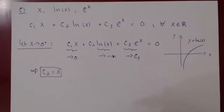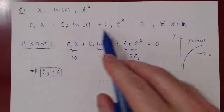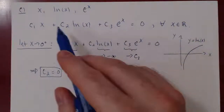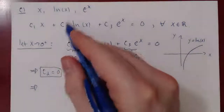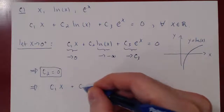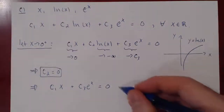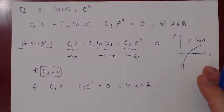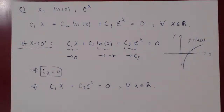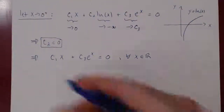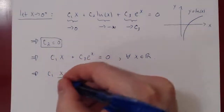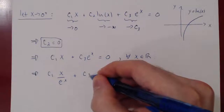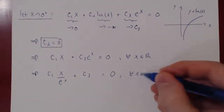Since c2 = 0, that term disappears and our combination becomes c1·x + c3·eˣ = 0 for all real values of x. We can divide across by eˣ, which is always positive, giving c1·(x/eˣ) + c3 = 0 for all real x.